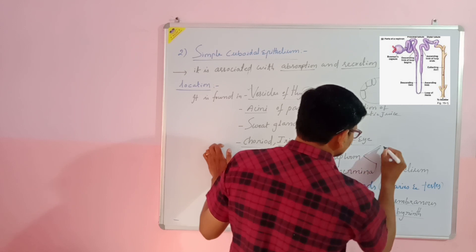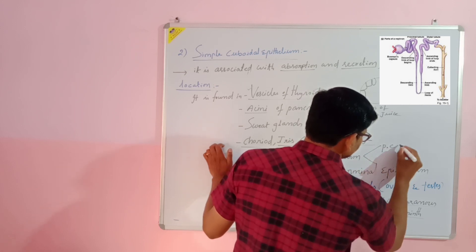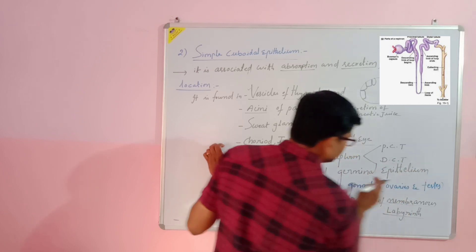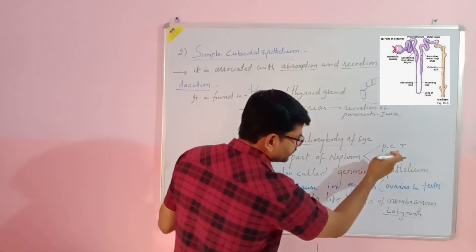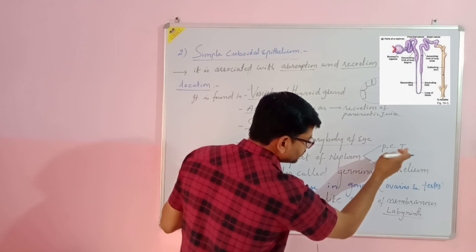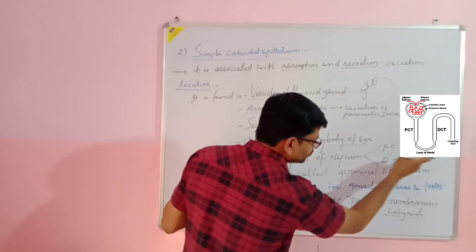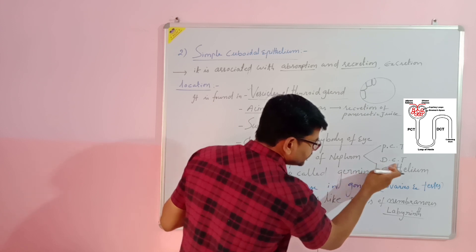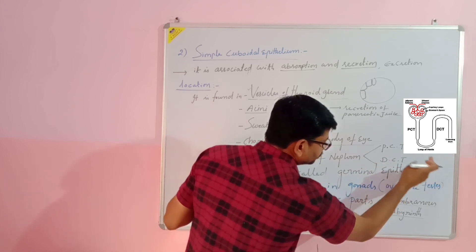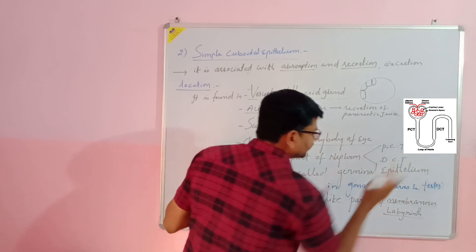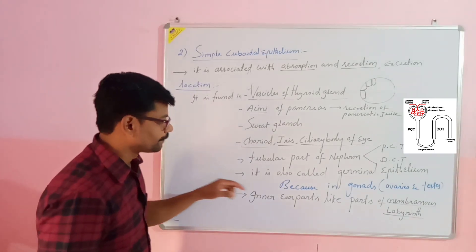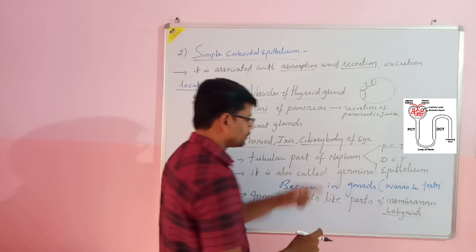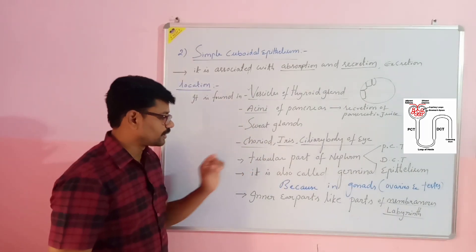The tubular part of the nephron consists of the PCT — proximal convoluted tubule — and the DCT — distal convoluted tubule. These two parts can be seen in the picture very clearly. Both the proximal convoluted tubule and distal convoluted tubule are parts of the tubular part of the nephron.